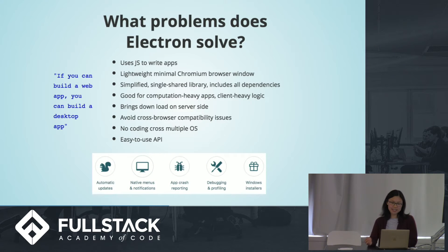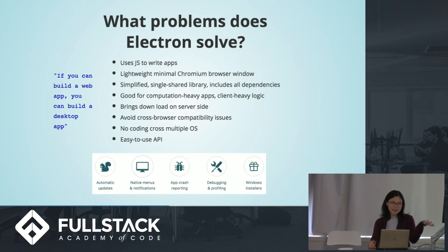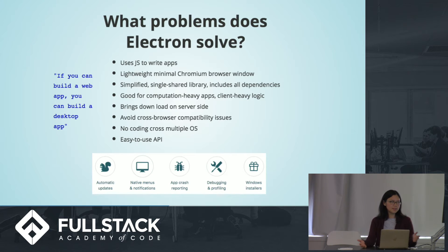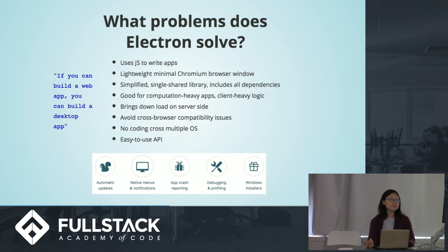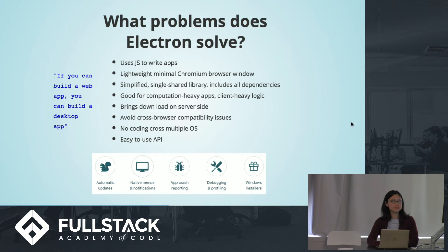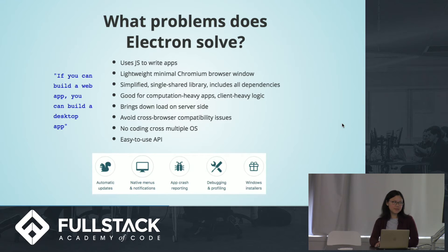Why is this relevant to us? In terms of the Senior Capstone project, if you want your user to have more access to your app instead of just doing everything in the browser, you can make a version of it that runs on a desktop, as well as mobile if you're so inclined. Electron uses JavaScript to write all the applications, which is widely accessible. It's lightweight, so you can quickly create and render browser windows. It has a simplified shared library including all your Node dependencies and modules. It avoids cross-browser compatibility issues. Their selling point is: if you can build a web app, you can build a desktop app.